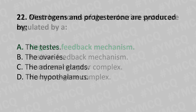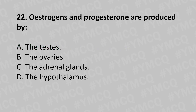Moving to our twenty-second question. Estrogen and progesterone are produced by: Option A: testes. Option B: ovaries. Option C: adrenal glands. Option D: the hypothalamus. And the answer is Option B: the ovaries.